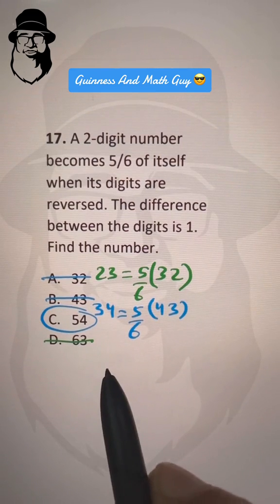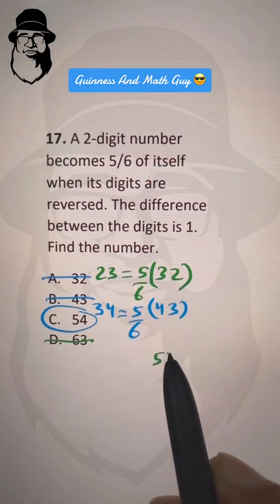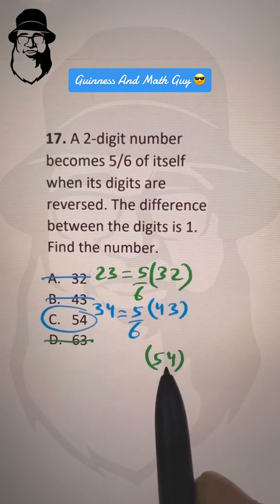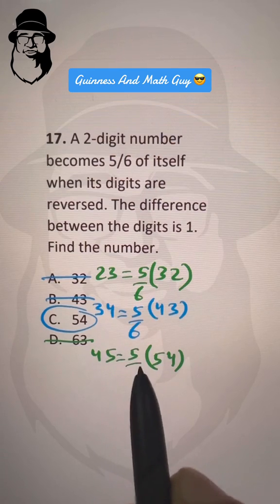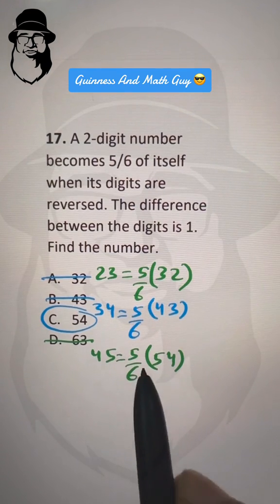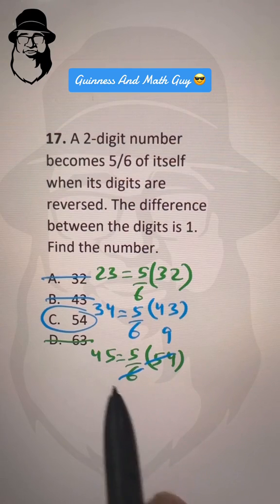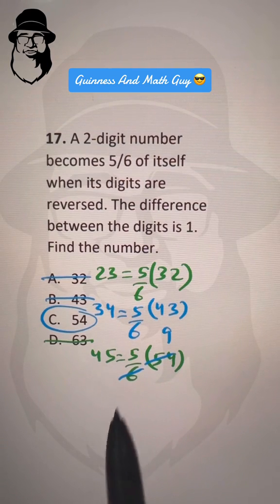Let's check it out: 54, and if we reverse the digits of 54 to make it 45, it becomes 5/6 of itself. So 6 times 9 is 54, 9 times 5 is 45. That's our answer because both sides are equal. Choice C is our answer.